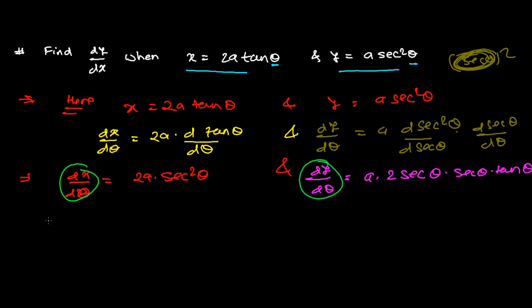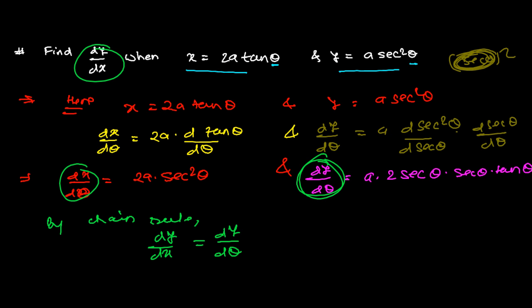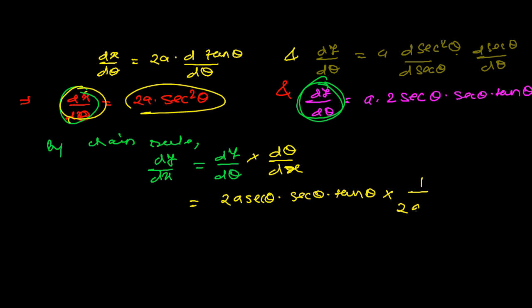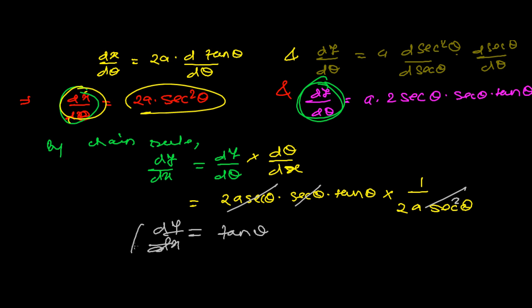By the chain rule, dy/dx equals dy/dθ multiplied by dθ/dx, which is the reciprocal of dx/dθ. Substituting: dy/dθ is a·2·sec(θ)·sec(θ)·tan(θ), and dθ/dx is 1/(2a·sec²(θ)). Now we cancel: the 2a cancels with 2a, and sec²(θ) cancels with sec²(θ), leaving us with tan(θ).